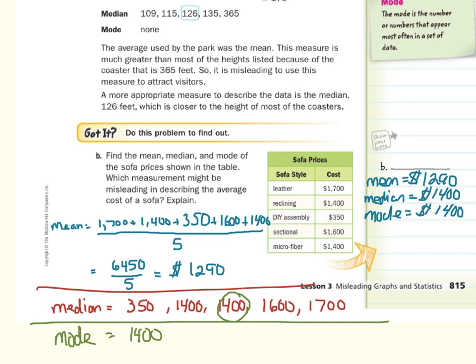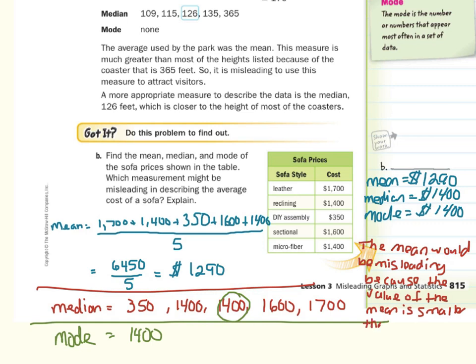Well, that very low price threw off the mean. It gave us a mean that is unnaturally low. In fact, this mean is smaller than all but one of the values. The other four values are all larger than the mean. And so we can say for our answer, then, that the mean would be misleading because the value of the mean is smaller than four of the five sofas.